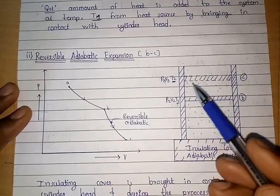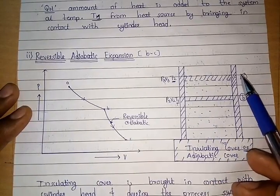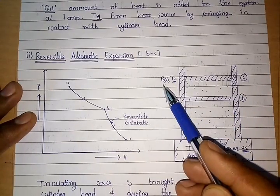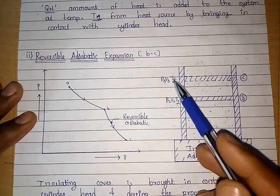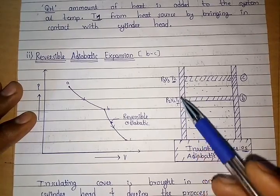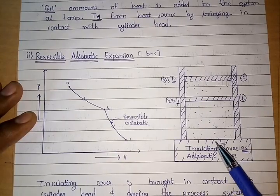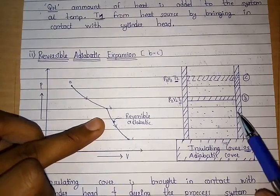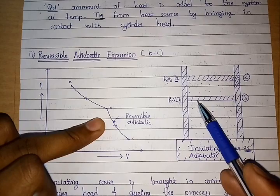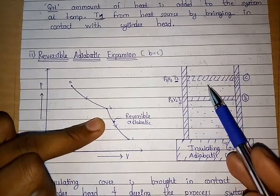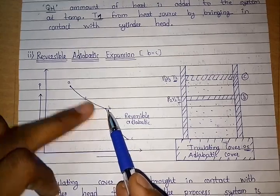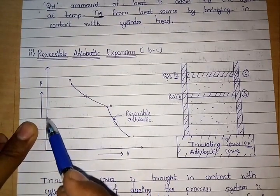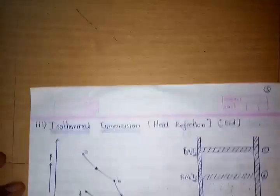As heat was already transferred to the gas, the gas continues expanding from B to C. C is the next position of the piston. At this position, pressure is P3, volume is V3, and temperature is T2. There is a change in temperature, but because it is an adiabatic process, there is no change in entropy. On the PV diagram, as volume increases from B to C, pressure decreases.